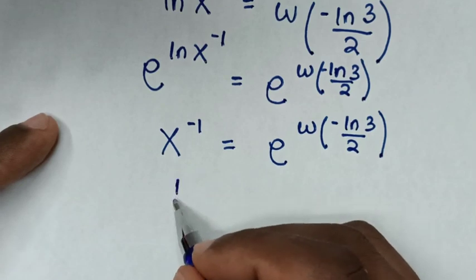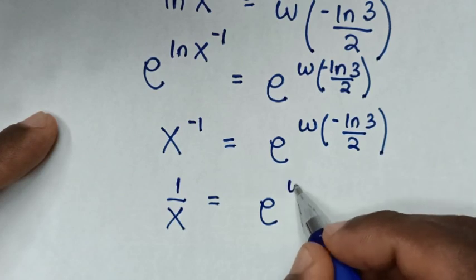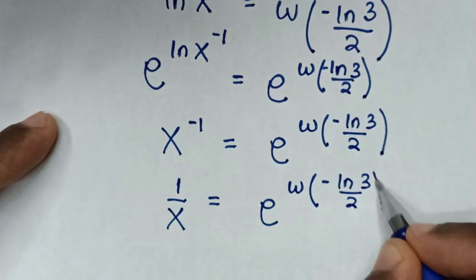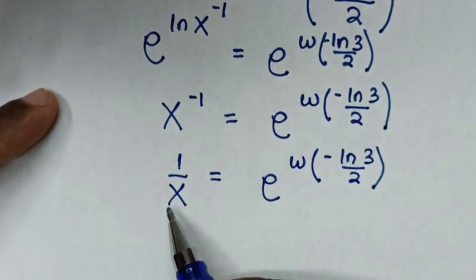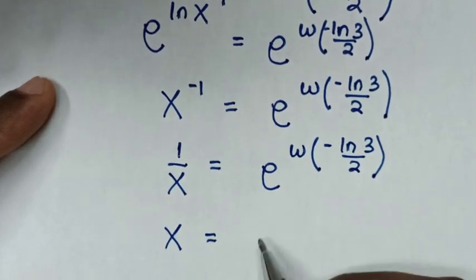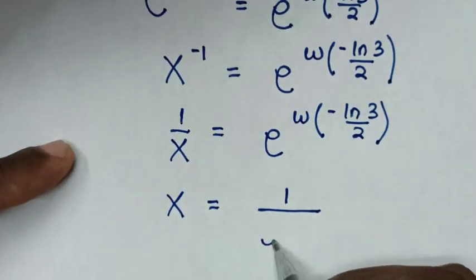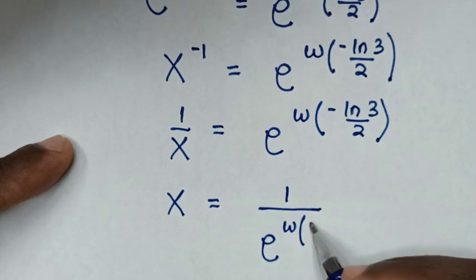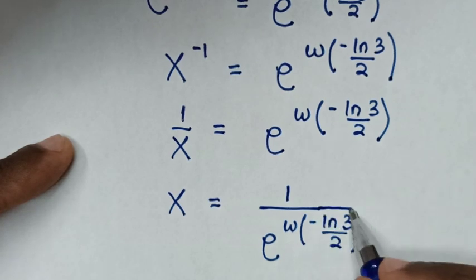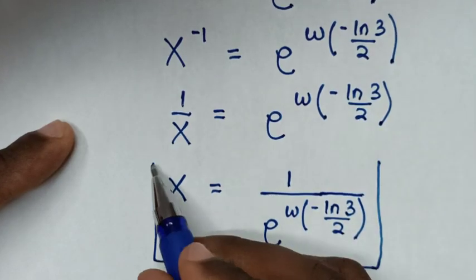So x to the power of negative 1 is equal to e to the power of W(negative ln(3)/2). Then to find the value of x, the reciprocal of 1/x is x, which equals the reciprocal of the right side: e to the power of W(negative ln(3)/2). Therefore, this is the final answer for the value of x in this problem.